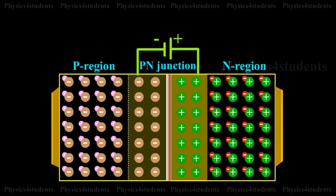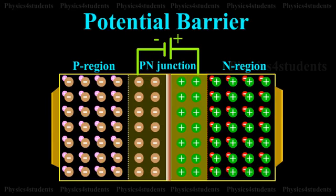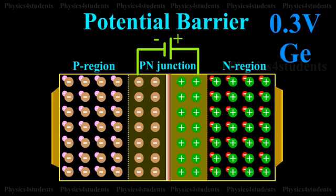The difference of potential from one side of the barrier to the other side is called the potential barrier. The potential barrier is approximately 0.7 volts for a silicon PN junction and 0.3 volts for a germanium PN junction.